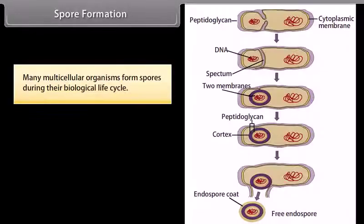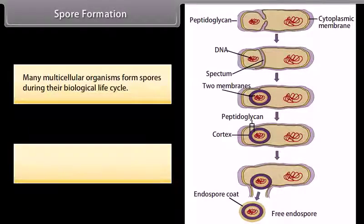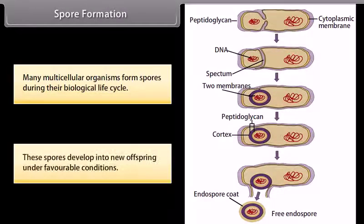Spore formation: Many multicellular organisms form spores during their biological life cycle. These spores develop into new offspring under favorable conditions.